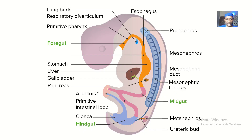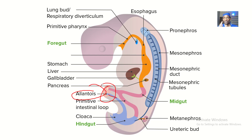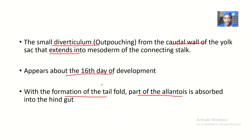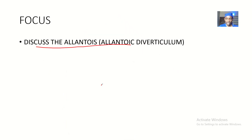Finally, let's look at the allantois. You can see that the allantois is part of the future umbilical cord, and being part of the future umbilical cord, it also directs the development of the umbilical cord. I hope you guys enjoyed this tutorial. Take care as we continue talking about formation of different structures during embryonic development.